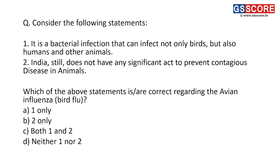Next: consider the following statements regarding avian influenza, that is bird flu. First statement: it is a bacterial infection that can infect not only birds but also humans and other animals — this is incorrect. Avian influenza is a viral infection, not bacterial, and it infects birds, humans, and other animals. So the first statement is incorrect.